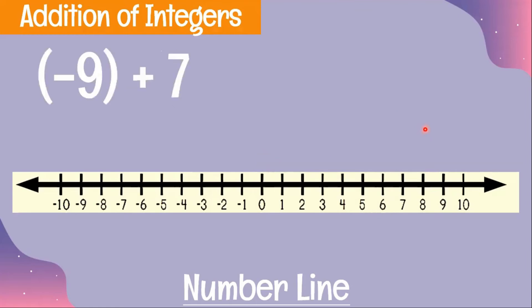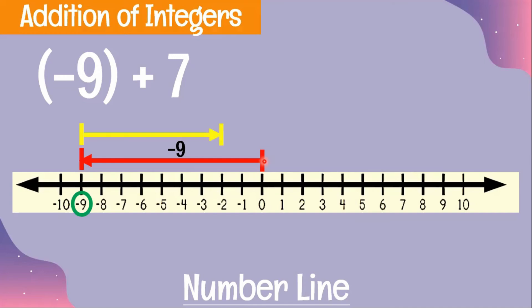Example 4: negative 9 plus 7. Start at zero. Since we have a negative sign, we use a red mark — that means 9 units to the left. Plus 7, we use a yellow arrow, meaning 7 units to the right. Therefore, we have negative 2, so negative 9 plus 7 is equal to negative 2.